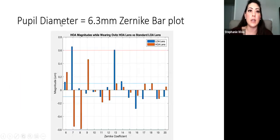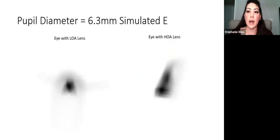Here's just a few other interesting images. If you have a pupil diameter at 6.3 millimeters, it's showing us that Zernike bar plot again, and this is the simulated E. This is really cool on the software, so you can see what the big E would look like with the lower order aberration versus the higher order. You can see the E looks very different, not that one is necessarily clearer than the other, but with the HOA lens, I can kind of tell that there are three little legs going off of the E, whereas the LOA lens, it just kind of looks like a blob, so it looks slightly better.